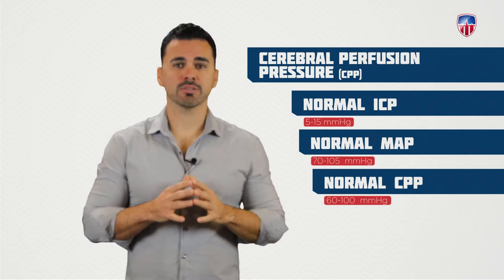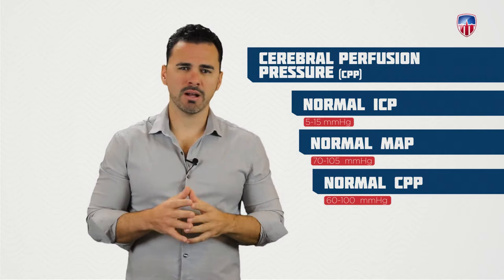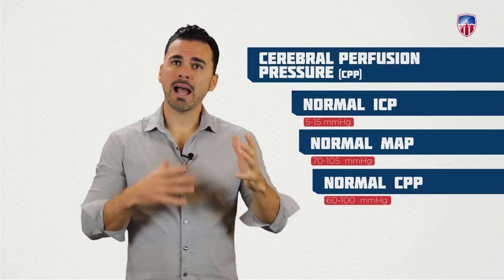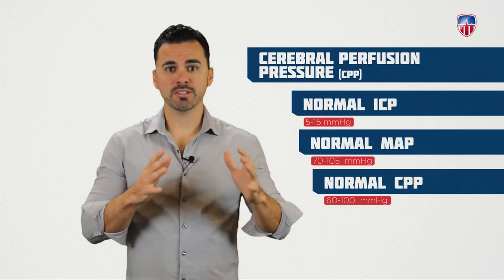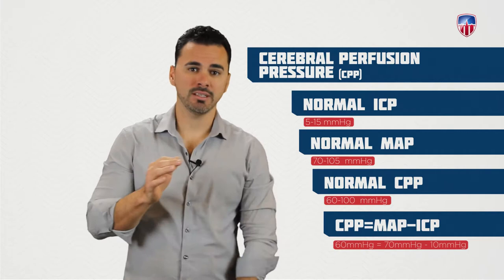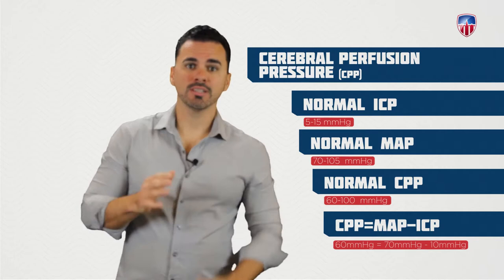Cerebral perfusion pressure is derived from the MAP and the ICP. MAP ranges from 70 to 105 and ICP ranges from 5 to 15. CPP equals MAP minus ICP, where changes in either MAP or ICP can affect CPP. CPP values should be between 60 to 100 mmHg.